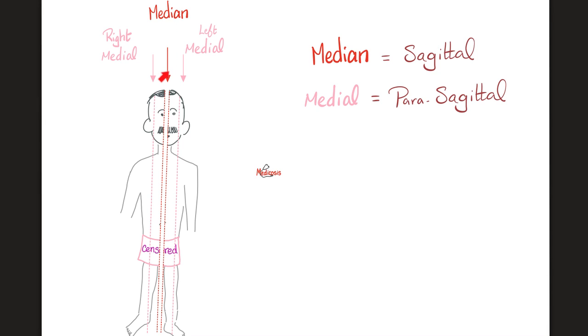Synonyms. The median plane has another name. Sagittal plane. Okay. How about medial? It's called the para, parallel, sagittal plane. Oh, now I get it.